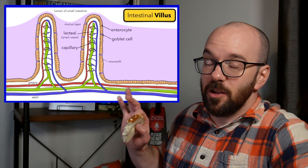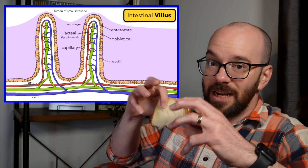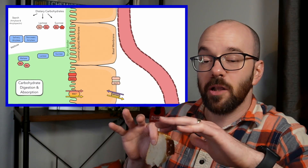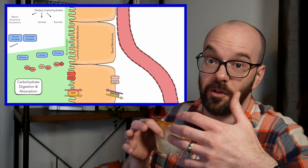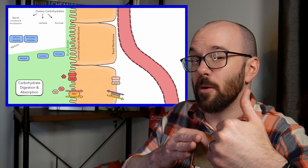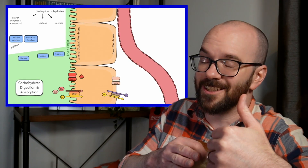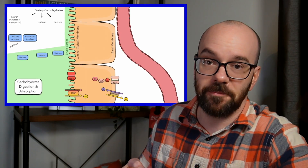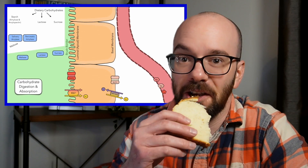In this video we're going to zoom into our intestinal villi, take a look at the enzymes that break down those carbohydrates, and then really focus on the process of absorption at the cellular level — how do we get those carbohydrates from our small intestine into our bloodstream so they can circulate? Let's jump to the whiteboard and get started.